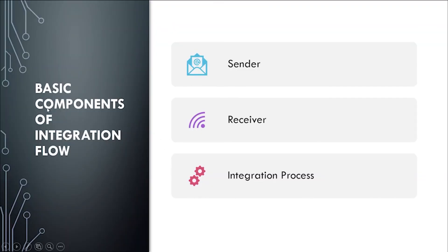The basic components of an integration flow are: the Sender system, the Receiver system, and the Integration Flow in between. The sender sends the data and the receiver receives it. Inside the integration flow, we can modify the message, convert data from one format to another, perform message mapping or data mapping if required, and also design exception-catching logic. Everything processing-related is done inside the integration process, while the sender and receiver are the endpoints.